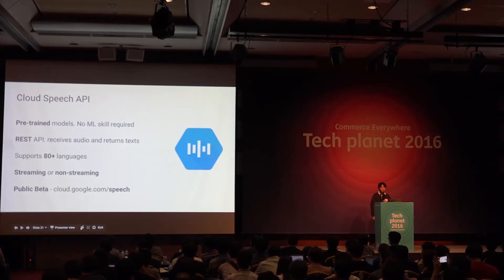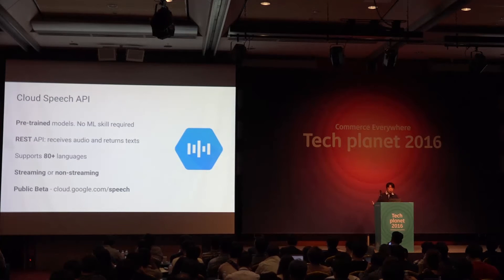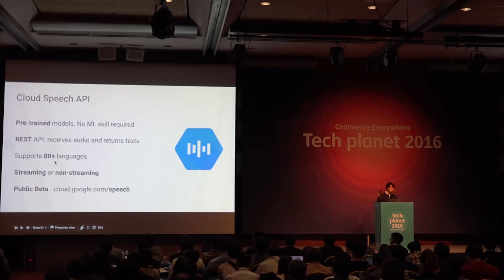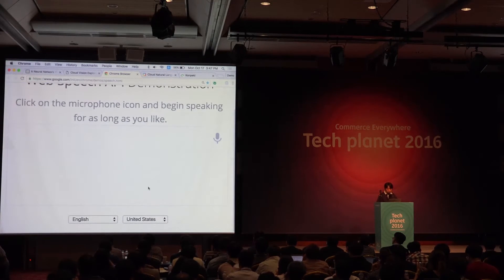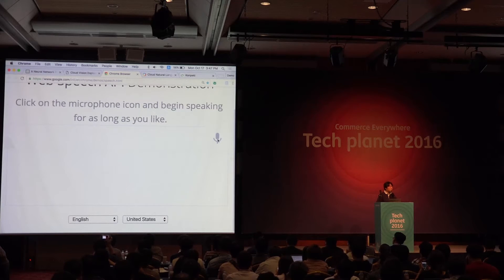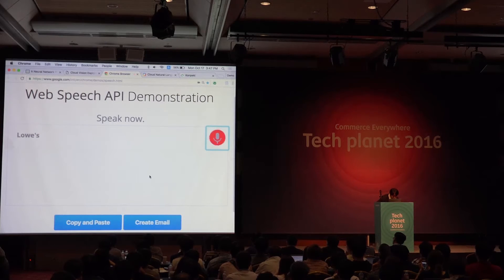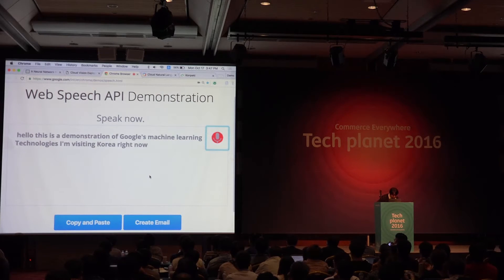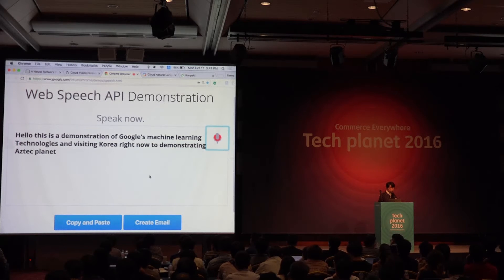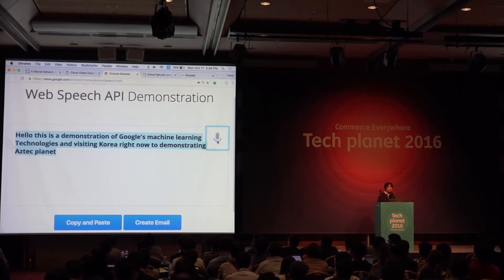The second API is called Speech API — a pre-trained model where you don't have to know anything about voice recognition. Just send your audio data to the API, and it returns the recognized voice as text. It supports over 80 languages including Japanese and Korean, and is now in public beta. Let me show a demonstration — I'm not sure it works well because I have an English accent issue, but let me try. 'Hello, this is a demonstration of Google's machine learning technologies. I'm visiting Korea right now to demonstrate at Tech Planet.' Not exactly perfect, but it's still high quality and real-time — you get the result in under 0.5 seconds.